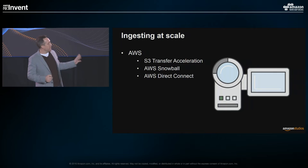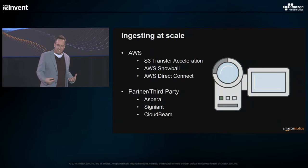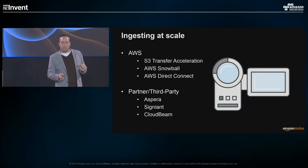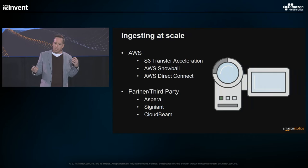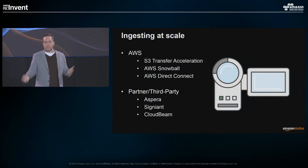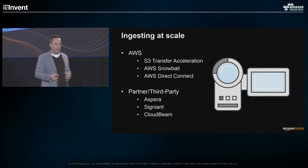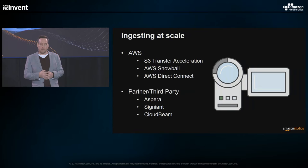The major players in the third-party atmosphere are definitely Aspera, Signet, and CloudBeam. These are really great tools. What they do is they don't use TCP transfer protocols — instead they use UDP to move content, which reduces chatter and increases performance a lot. It's predominantly used by all the major media companies. Disney and all the major studios basically have an Aspera or a Signet to move content.